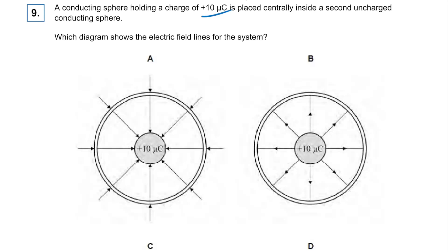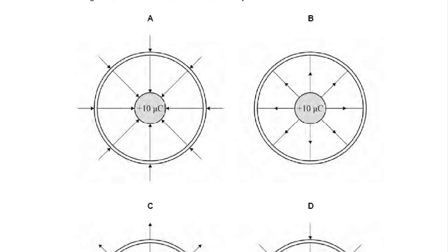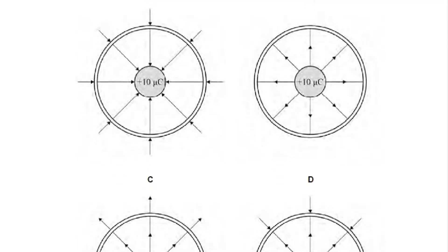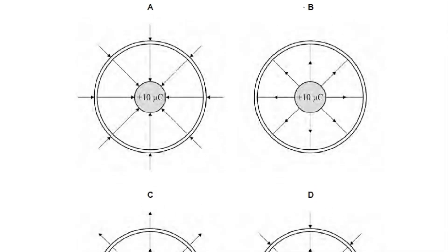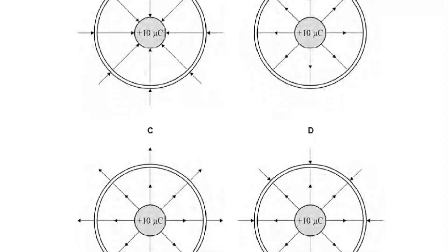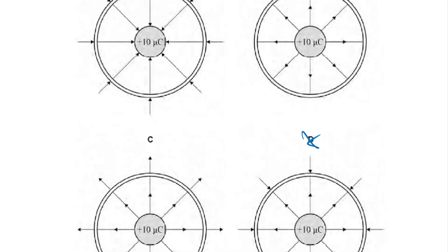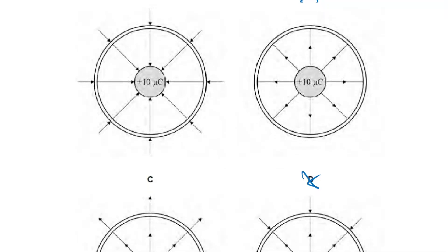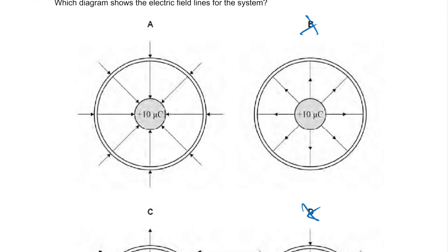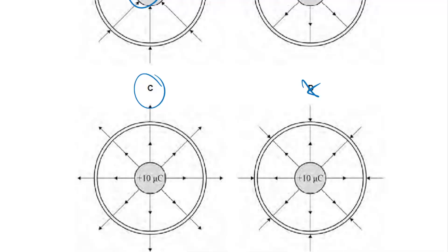Question nine: a conducting sphere holds a charge and is placed centrally inside a second uncharged conducting sphere. The field lines can go through the uncharged sphere — they don't just stop, so it can't be B. They're not going to change direction either. Field lines show the direction of force on a positive charge, so it goes away from the positive charge in the middle — C is our correct answer.